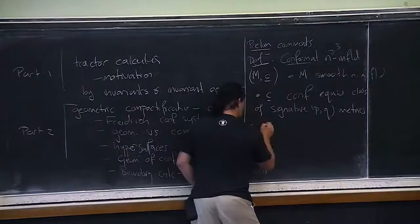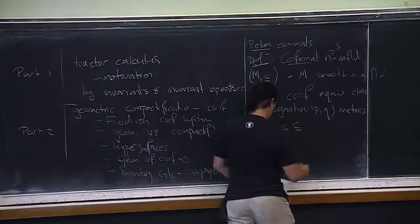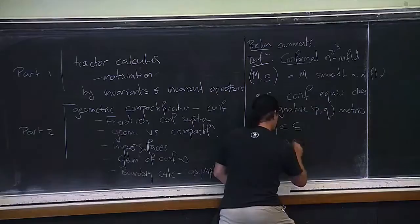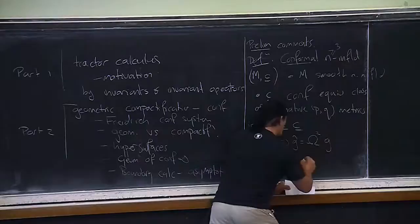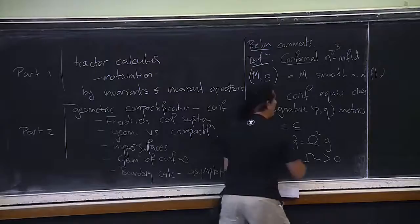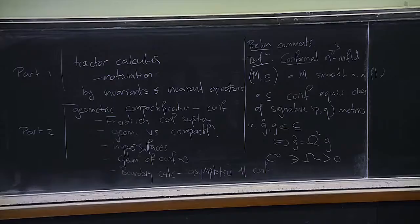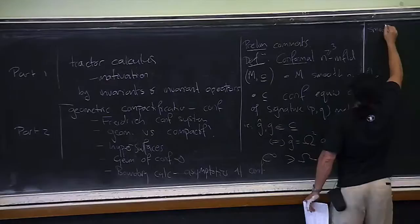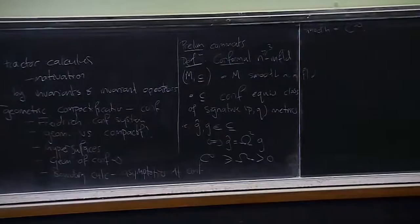What that means is that if you've got two metrics in the equivalence class, then they're related by a positive function: G-hat equals omega squared times G, where omega is a positive smooth function. Everything I talk about will be C-infinity — so smooth equals C-infinity.